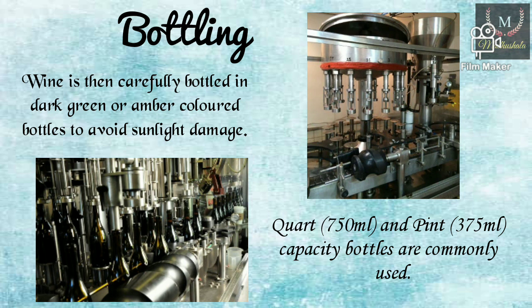The final step is bottling. Wine is carefully bottled in dark green or amber colored glass bottles to avoid damage from sunlight. During bottling, oxygen is removed from the headspace to prevent oxidation of the wine. Different closures such as corks or screw caps can be used for sealing the bottle. Commonly quart or pint capacity bottles are used. The bottles can be of different shapes, specific to wine regions. The next step is labeling with all the details, and finally dispatch.